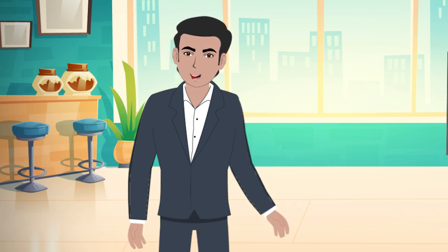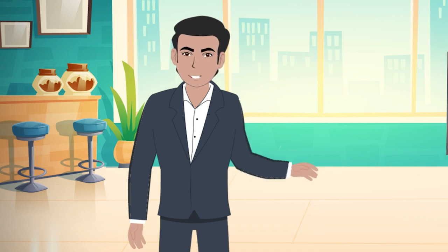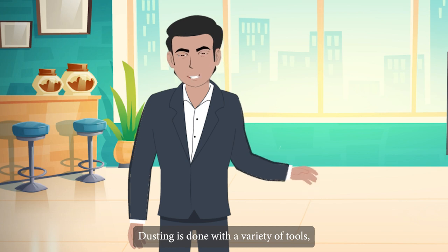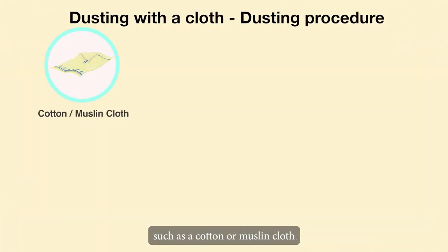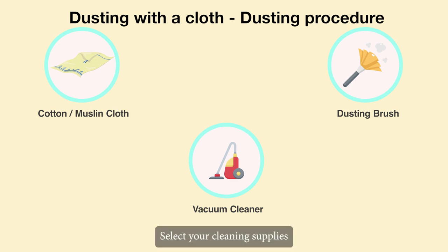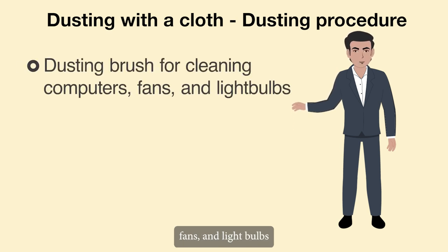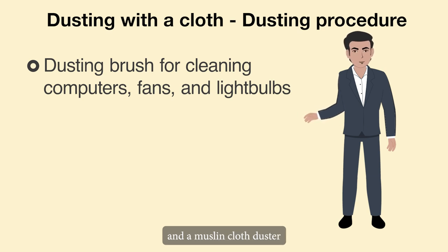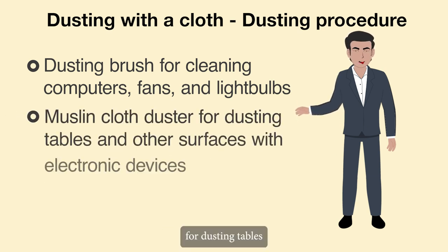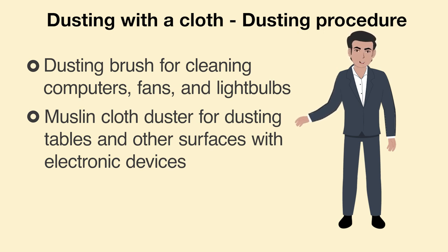A fresh soft cloth should be used for this. Dusting is done with a variety of tools such as a cotton or muslin cloth known as a duster, dusting brush, vacuum cleaner and so on. Select your cleaning supplies appropriately for the job, such as a dusting brush for cleaning computers, fans and light bulbs, and a muslin cloth duster for dusting tables and other surfaces with electronic devices.